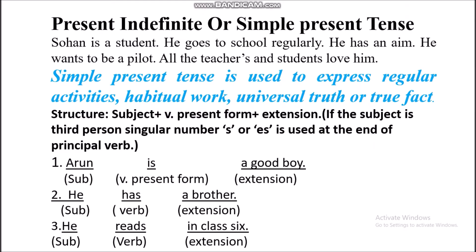Present indefinite or simple present tense. Read the sentences: Shohan is a student. He goes to school regularly. He has an aim. He wants to be a pilot. All the teachers and students love him. Simple present tense is used to express regular activities, habitual work, universal truth, or true fact.